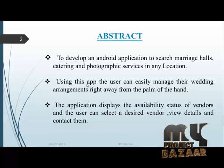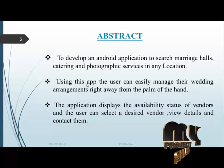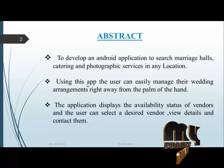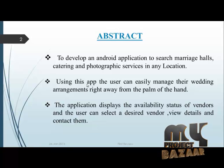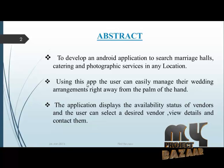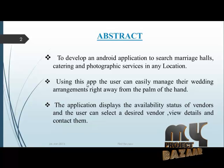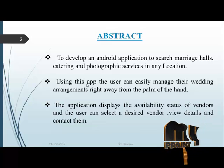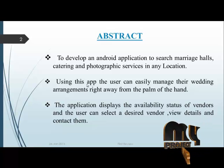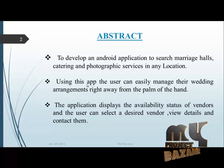The customer can search for whatever they need — marriage halls, catering, and photographic services — for a particular time and marriage arrangement date. On the vendor side, we have three types of vendors: marriage halls and venues, catering, and photography. Each type has separate login.